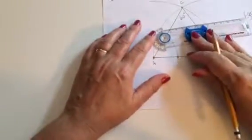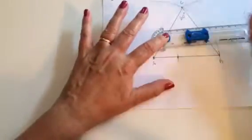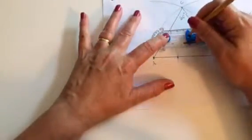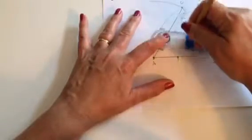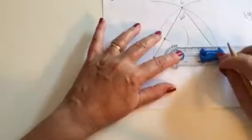From those two points, I'm going to swing more arcs inside the interior of the angle. I didn't change the measure of the compass. I left it exactly the same. So I'm going to swing here, and then from this point, I'm going to swing here. So I found a new point of intersection.